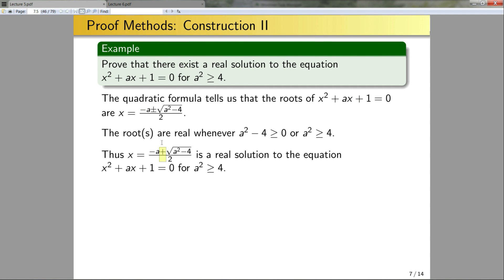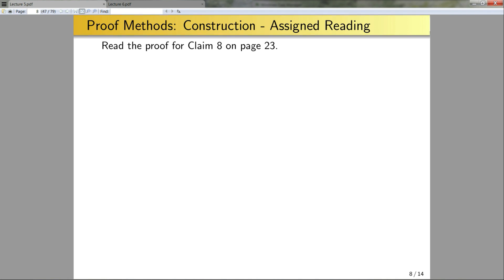So notice that here, I just use plus instead of plus or minus. That's simply because I only need one solution. I don't need the two. And it's not true to say that I have two real solutions, because if a squared is equal to four exactly, then I only have one solution. So by taking just simply the positive root or the negative root, I'm just being a little bit more precise there. I'm going to give you some assigned reading for proof by construction. In particular, read the proof for claim eight on page 23.